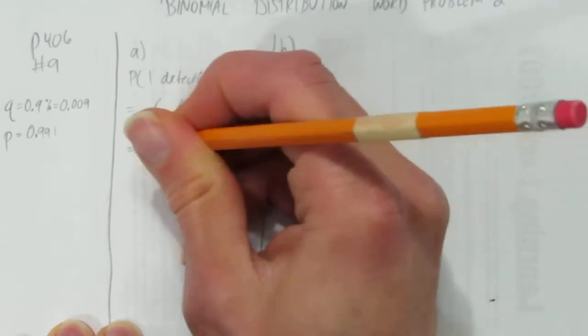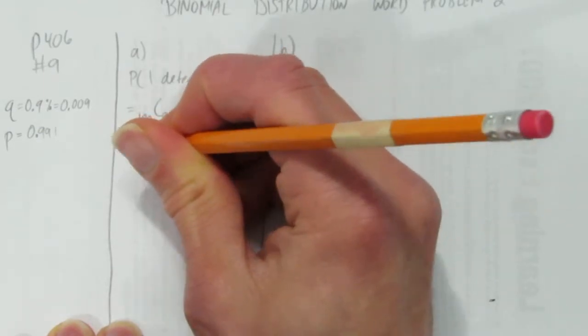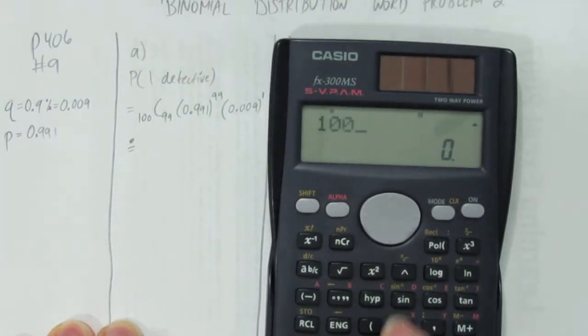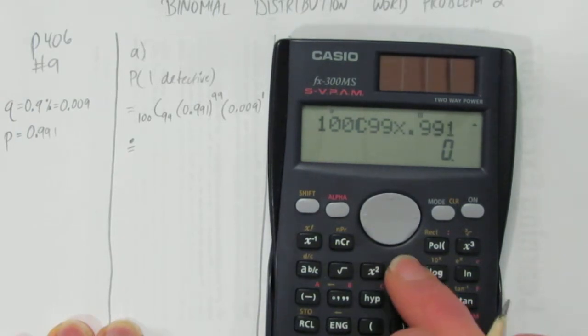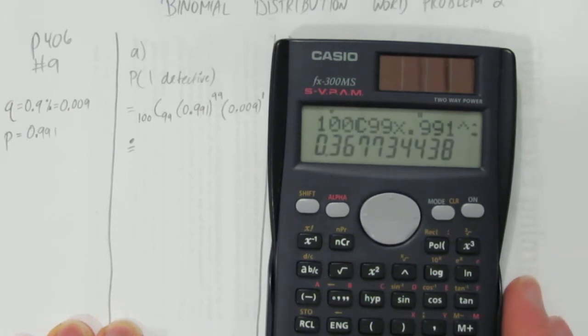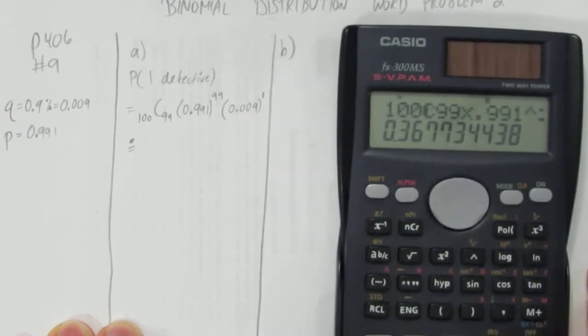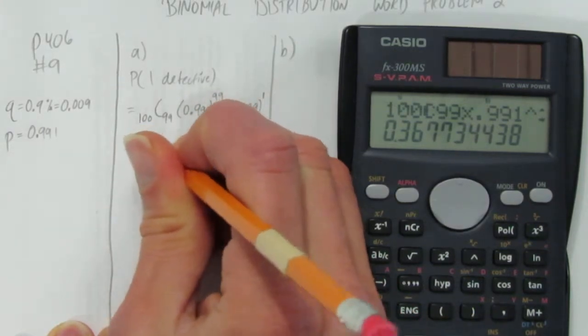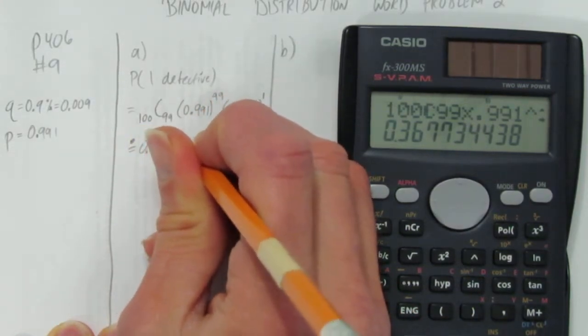We're going to do that whole calculation. I'm going to put a rounding dot because for sure there's going to be rounding. We'll do the whole calculation at once on the calculator: 100 choose 99 times 0.991 to the power of 99 times 0.009 to the power of 1. You don't really need the power of 1. And you get, let's round to 5 decimals, 0.36773.